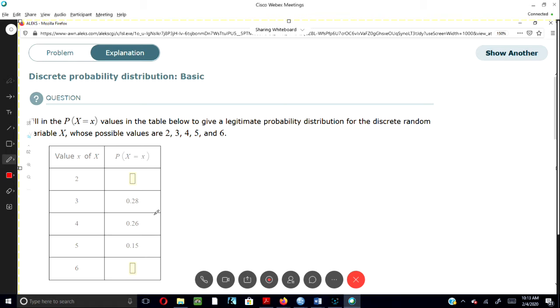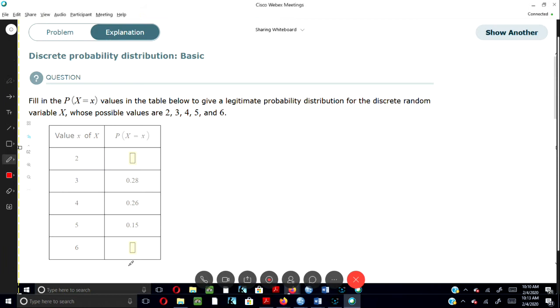We already have three probabilities listed. The easiest way to work this problem is to know that the sum has to equal 1. No matter what numbers you have in these spots, when you add them all together, it has to equal 1.